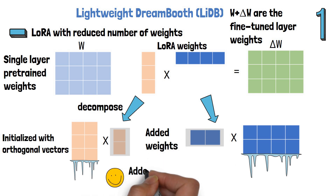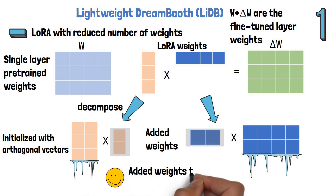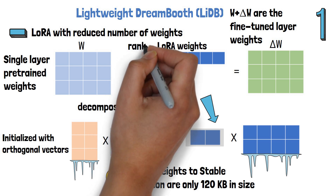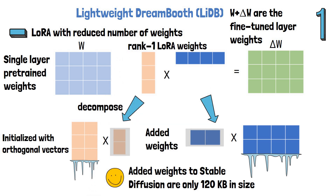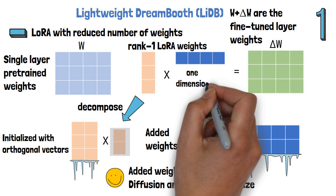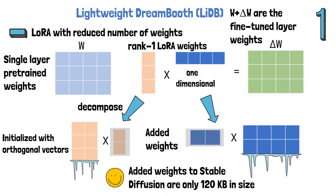Using this method the added weights to Stable Diffusion are only 120 KB in size. Note that rank 1 LoRA is used in this example, as they do in the paper, which is why the LoRA weights are vectors and not matrices, but this can work for higher rank LoRA as well.